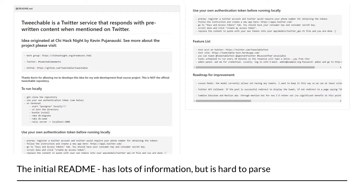This was our README a few months ago. It has a lot of information — you can see that it has links to the workgroup, to our Twitter, to GitHub, all those things. But it's really hard to parse. It doesn't really read clearly; it's not well organized. So it makes it kind of challenging for a new contributor to come on and say, okay, this is what I'd like to do.